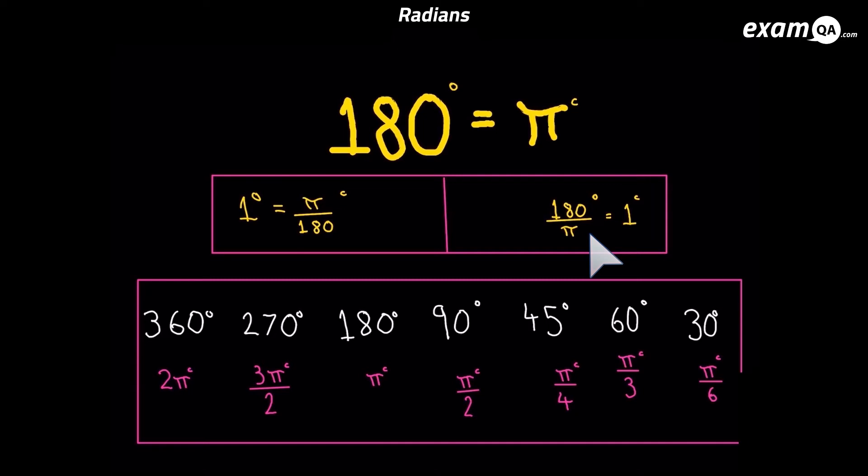So here I've got a whole load of degrees and their value in radians as well. Now these ones you should memorize. You can get them using the formula, but it's better if you simply memorize them so you can say them very quickly and recognize them when you see them as well. It's going to help you a whole lot. So just pause this video and see if you can memorize these ones.